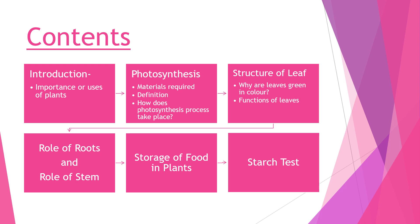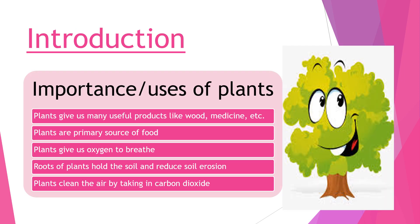Can you imagine your life without plants? No, you cannot. Living beings are either plants or animals; we human beings are also a type of animal and we are dependent on plants for various uses. We get products like wood, medicine, rubber, etc. from plants. They are the main or primary source of food for herbivores on the earth, and without the herbivores, the carnivores or omnivores will also not exist. Omnivores also eat plants, so plants are a very important part of food for omnivores.